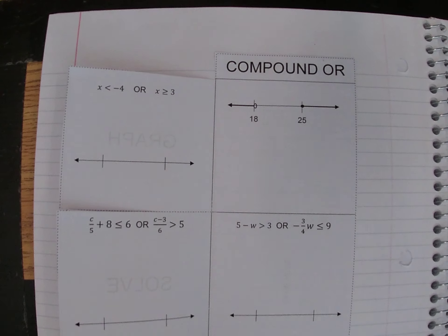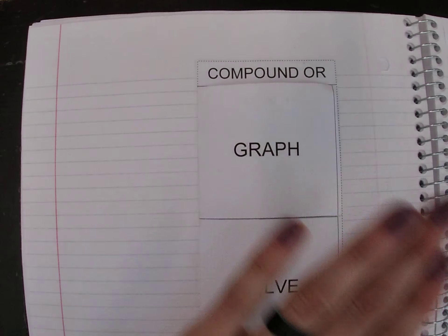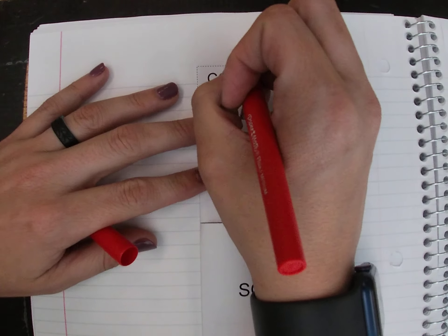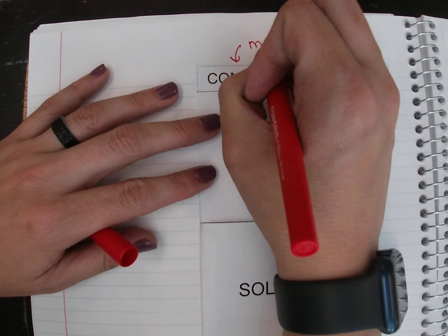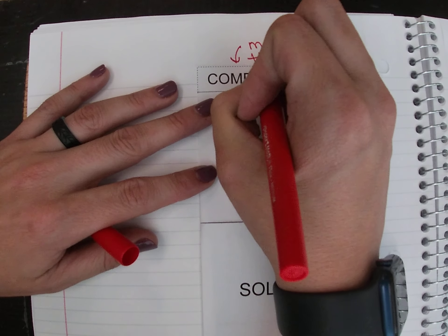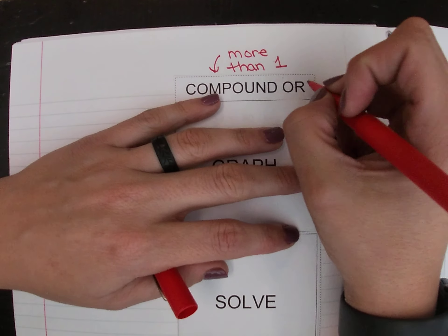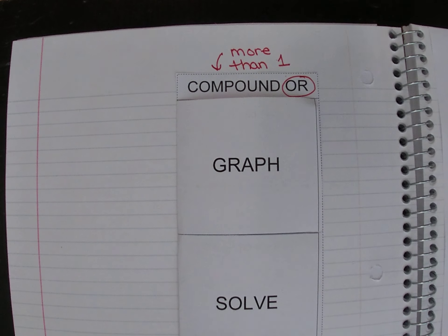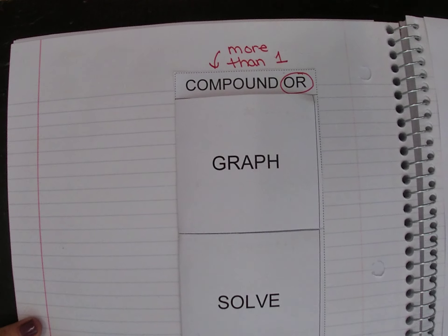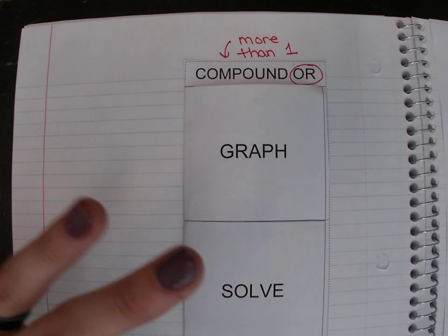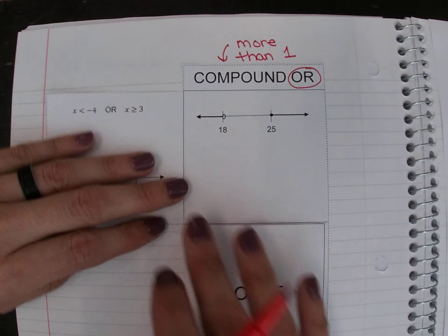When we are talking about compound inequalities, the word compound means more than one. So we are talking about more than one inequality, and it is going to be attached together using the word 'or.' We can talk about these by graphing them, solving them, and writing them, so we're going to look at all these options.